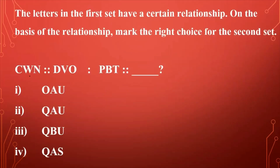The third question: the letters in the first set have a certain relationship, and on the basis of that relationship, we are asked to mark the right choice for the second set. So let's look at the letters here: C, W, N and D, V, O — this is our first series. If you look at the first letter of the first term and the first letter of the second term, D is the letter after C. So the first letter in our answer should be Q, the letter after P.